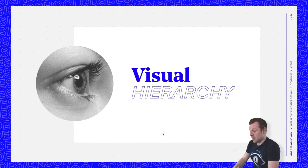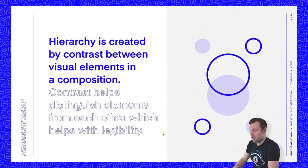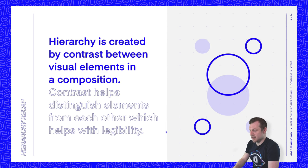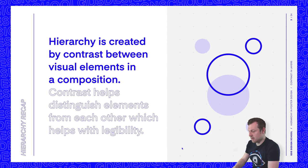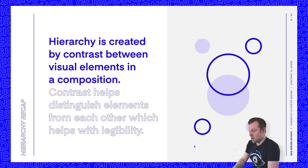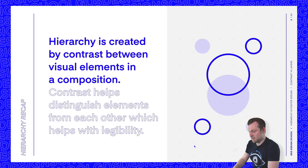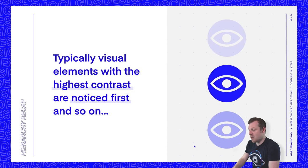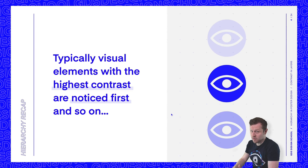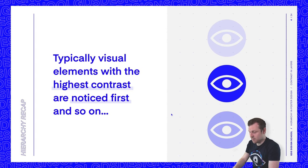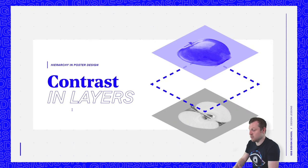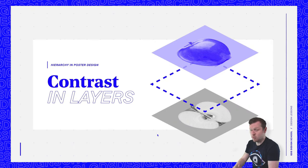A quick recap: hierarchy is created by contrast between visual elements in a composition. Contrast helps distinguish elements from each other, which helps with legibility. Typically, visual elements with the highest contrast are noticed first and so on. And one of the key ways to achieve contrast in poster design is with layers.